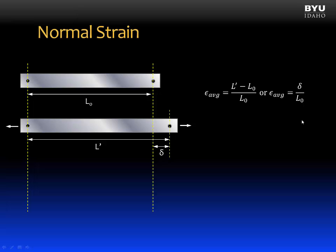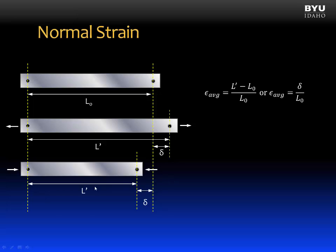Now strain works in the opposite direction, too. Suppose we put a force in the opposite direction. We compress the member. What is going to happen to those two points? We see that they move closer together. Our new length we'll still call L-prime. And that change in length we'll still call delta.